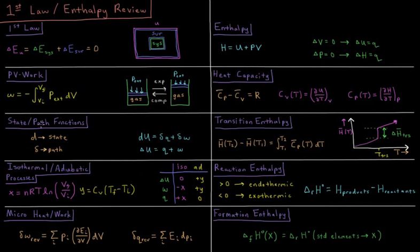We define state and path functions where state functions use exact differentials, things like dx, dy, etc. And path functions use inexact differentials with a lowercase Greek delta letter there. Heat and work are path functions, whereas energy is a state function, so du equals dq plus dw, and delta u equals q plus w. D is indicating a small microscopic change, and delta indicating a large macroscopic change.